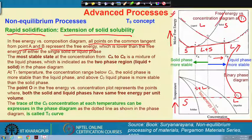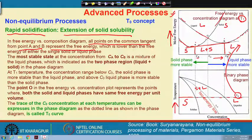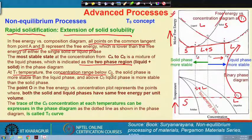From A to B, a mixture of solid and liquid has a lower free energy than either solid or liquid alone, which is why we get a mixture of solid plus liquid in this composition range at temperature T1. This is the most stable state, which indeed has a two-phase region. At T1, for the concentration range below C0, the solid phase is more stable than the liquid phase.